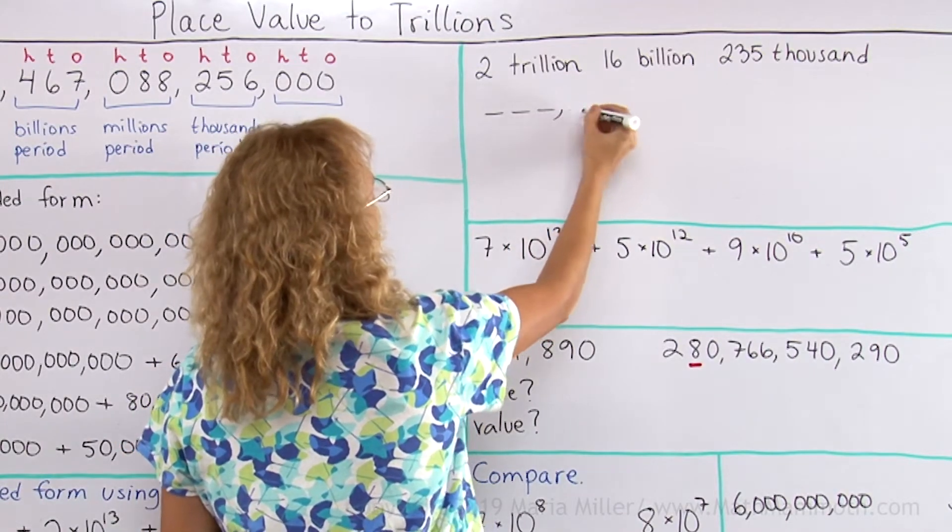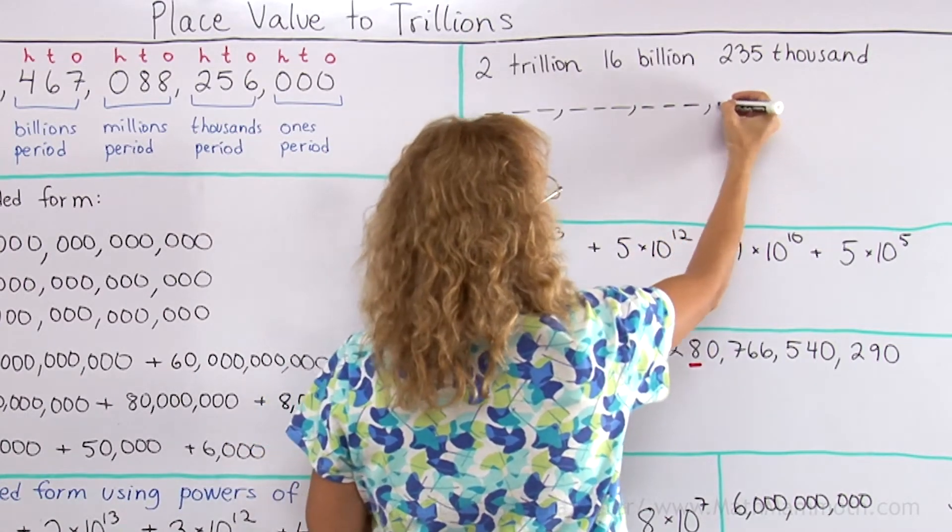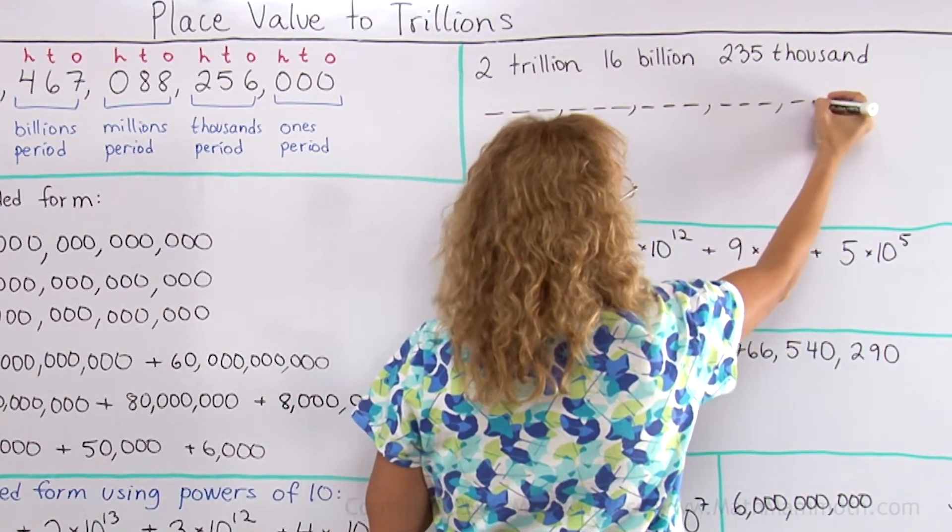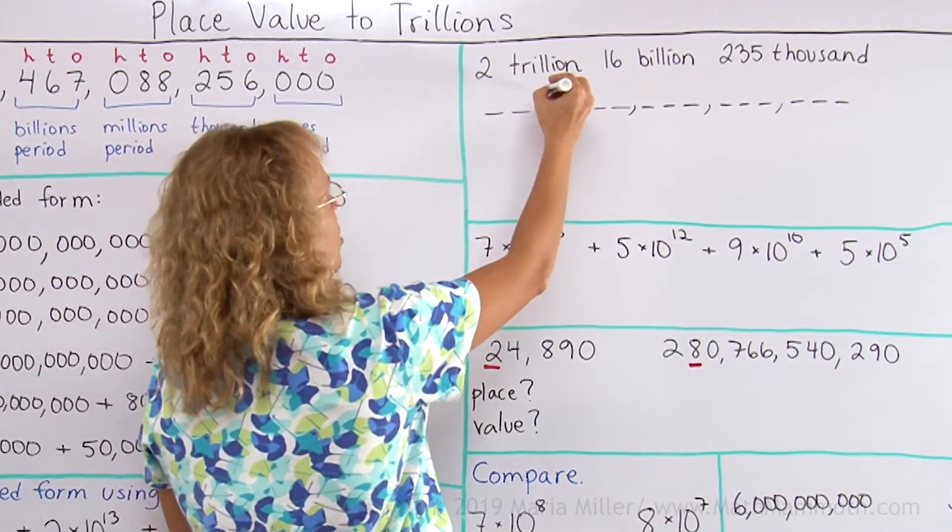This would be the trillions period, then here's my billions, here would be my millions, and then six more digits after that. And now I will place everything there. 2 trillion means 2 here,